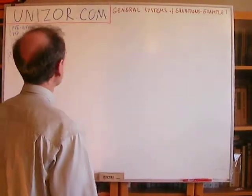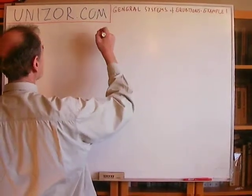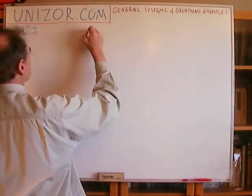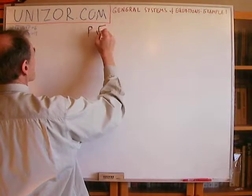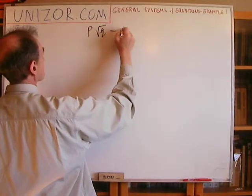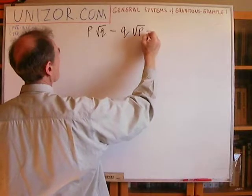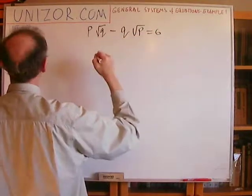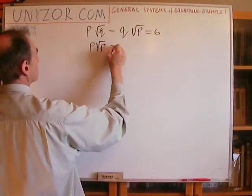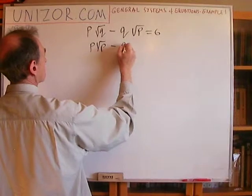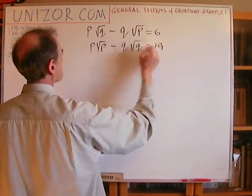System number one: P times square root of Q minus Q times square root of P equals 6; P times square root of P minus Q times square root of Q equals 19.